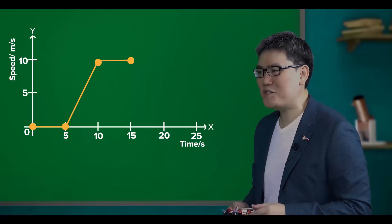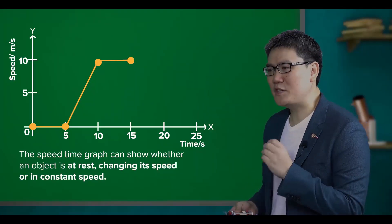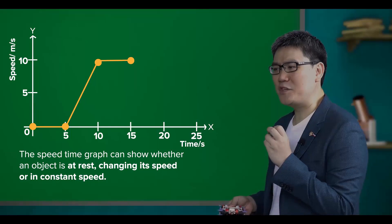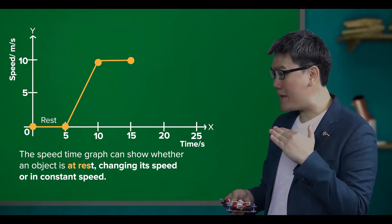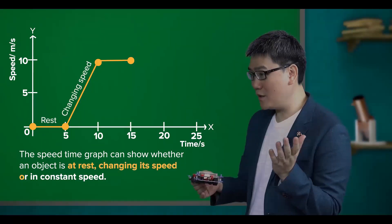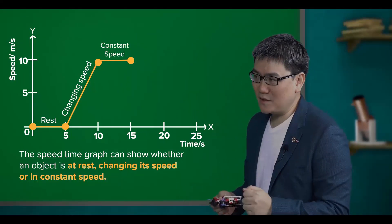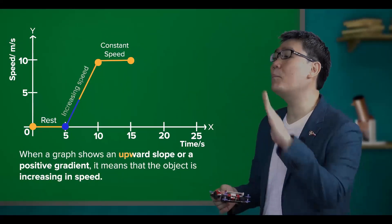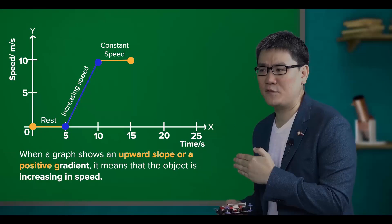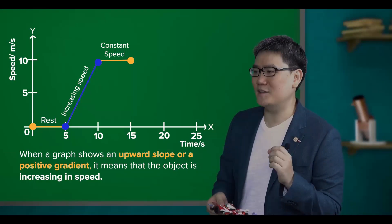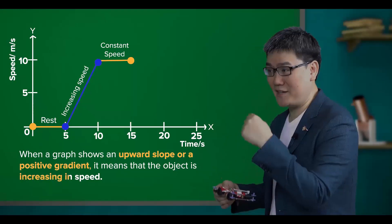Is that correct? Good observation. So you can see, the speed-time graph can show you whether an object is at rest, changing its speed, or in constant speed. When a graph shows an upward slope or a positive gradient, you can infer that the object is increasing in speed.